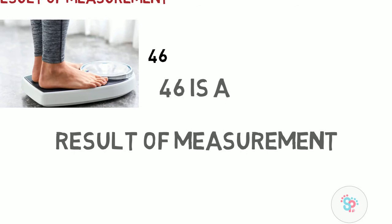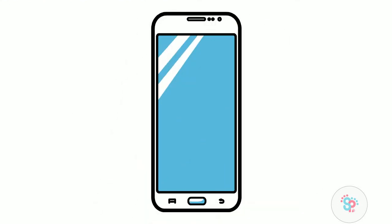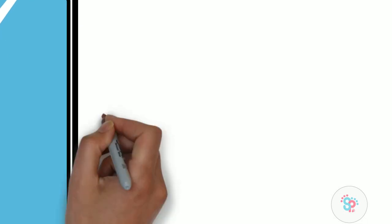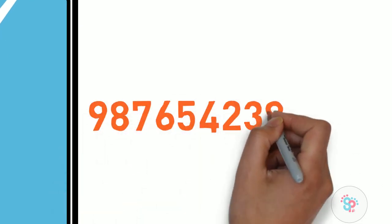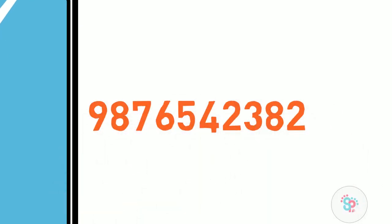But the numeric value that qualitative data holds doesn't have mathematical meaning. For example, consider phone numbers — it would be something like 9876542382. That number is just a number and doesn't have any mathematical meaning.